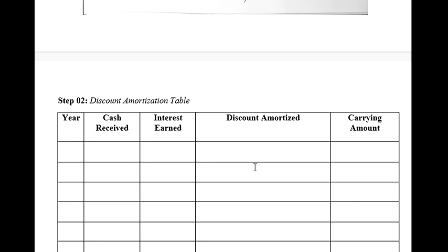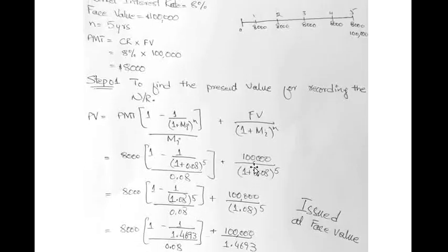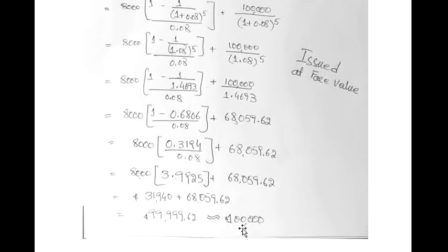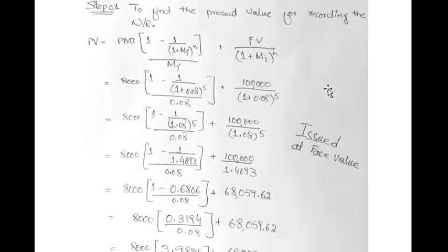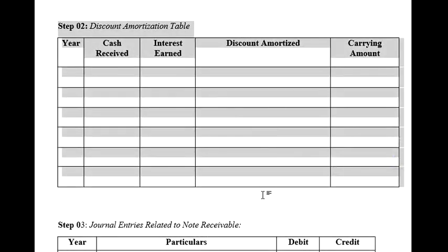Step two concerns the discount amortization table. Not every note receivable requires one — it depends on the type of note. In this case, since the note is issued at face (market rate equals contract rate), the money paid today equals the money expected at contract end. When face value equals the amount paid today, a discount amortization table is not required. It is only needed when those two amounts differ.